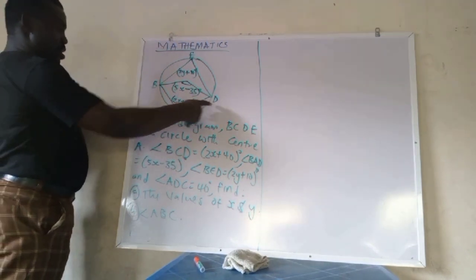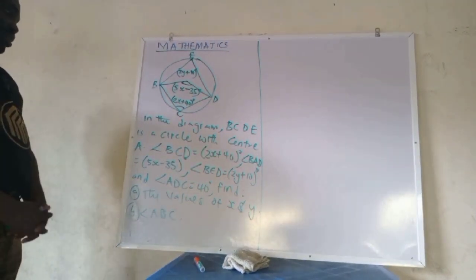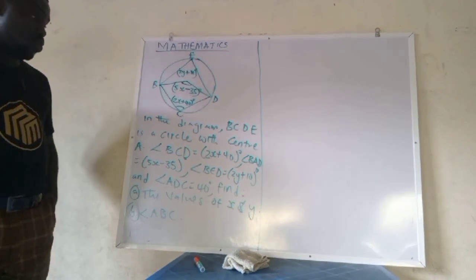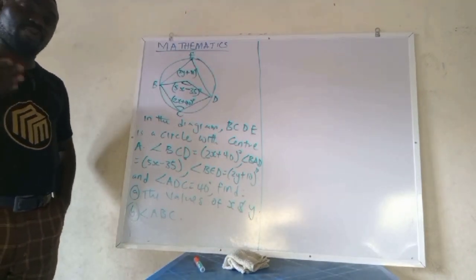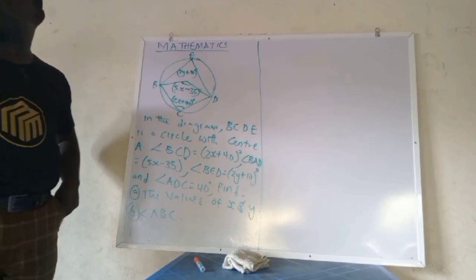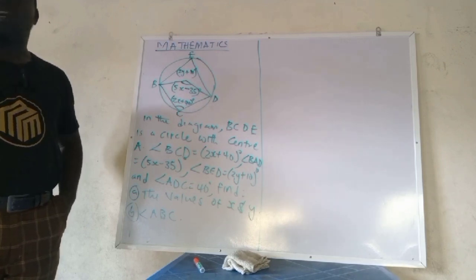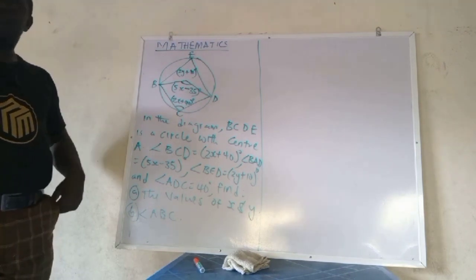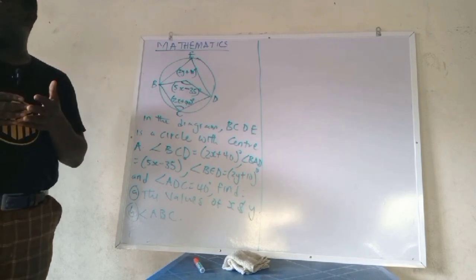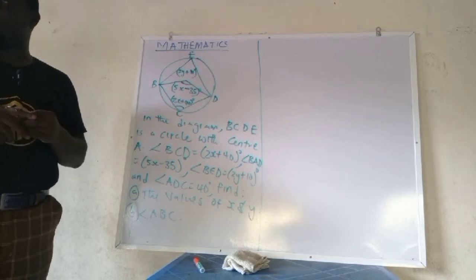So do not forget some of the rules you have learned in circle geometry. For example, you were taught that the angles subtended at the center is twice the angle at the circumference. Number two, you were also told that opposite angles of a cyclic quadrilateral equals to supplementary angle, equals to 180.